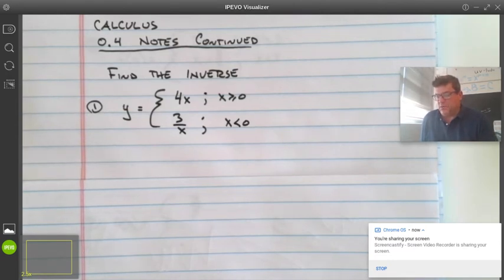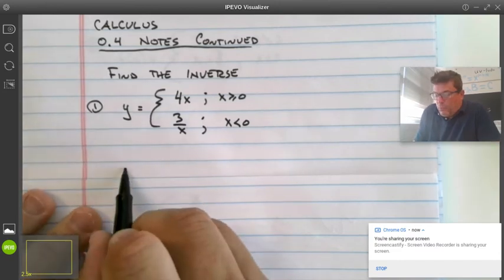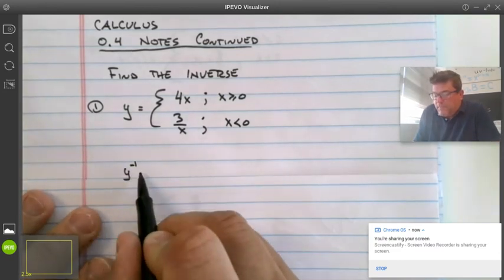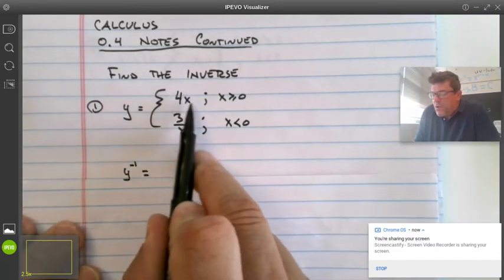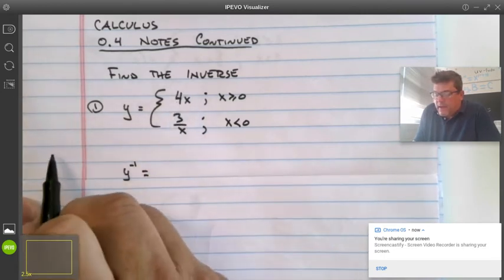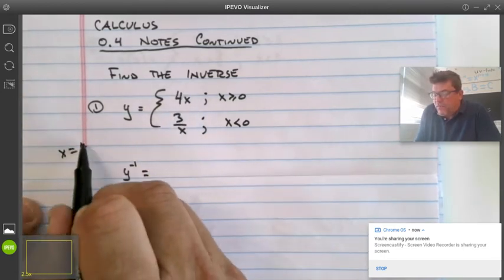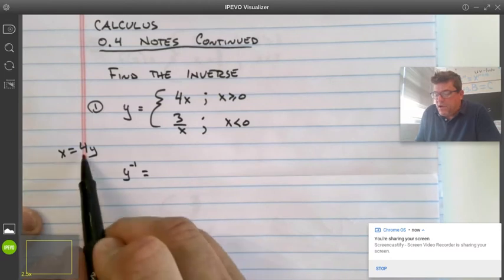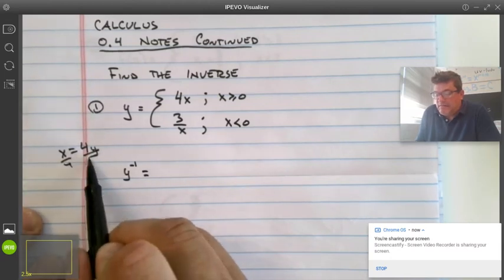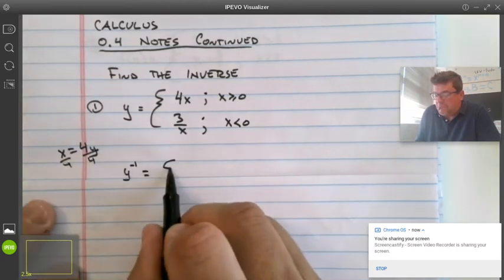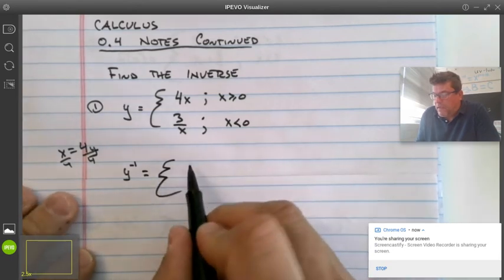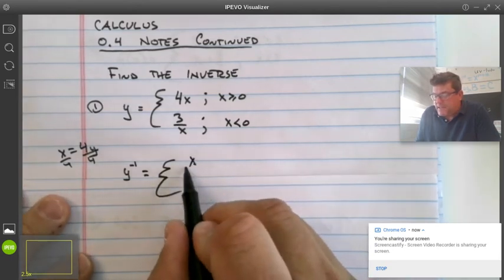So it seems pretty easy. The inverse would be, when we switch x and y here, it would look more like x equals 4y and then solve for y. That is x over 4.